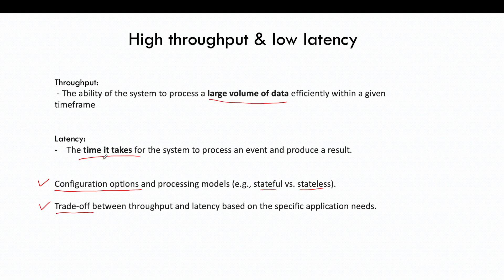Latency is the time it takes for the system to process an event and produce a result. While throughput talks about volume of data, latency talks about the time it takes to process that data. In Spark streaming or Apache Flink, there are configuration options and different processing models — such as stateful or stateless processing — that can be utilized to achieve high throughput or low latency use cases.